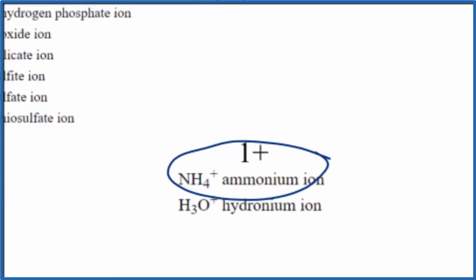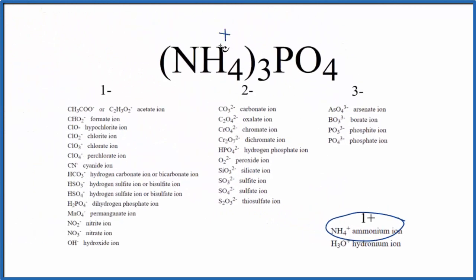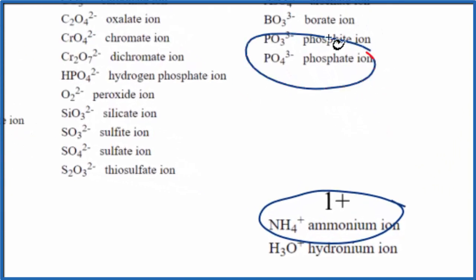NH4 is the ammonium ion, has a positive charge, a 1 plus ionic charge. So we have the ammonium ion here, and then the PO4, that's the phosphate ion.